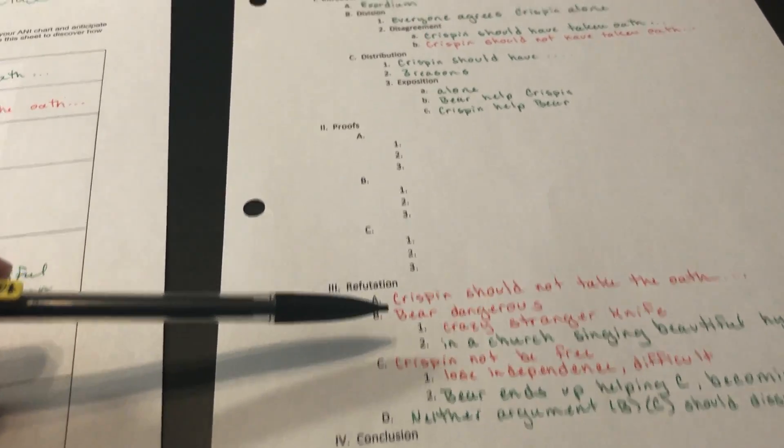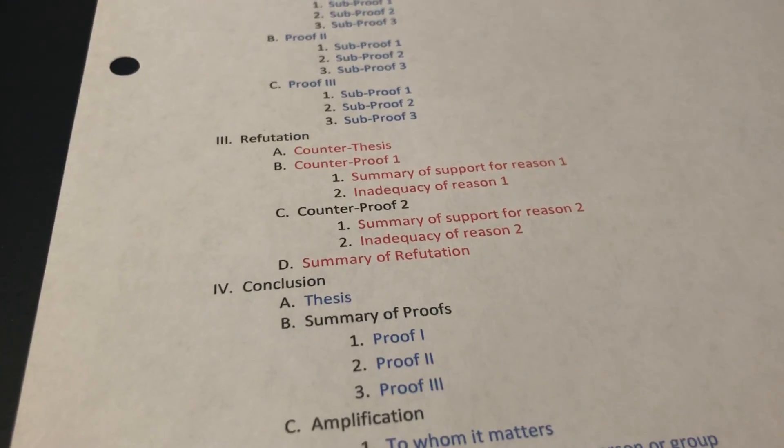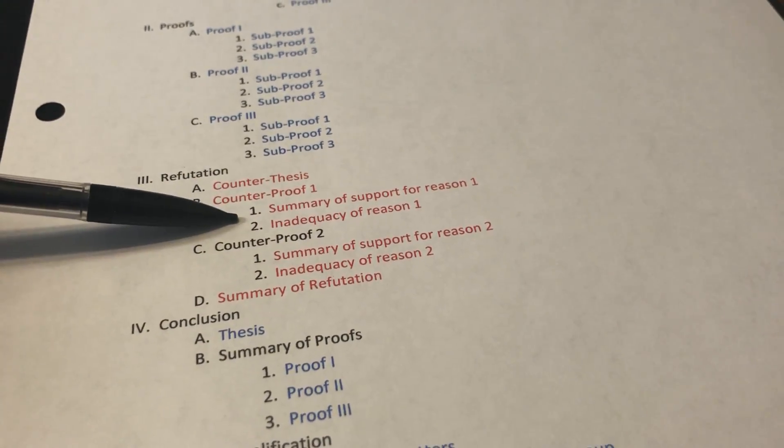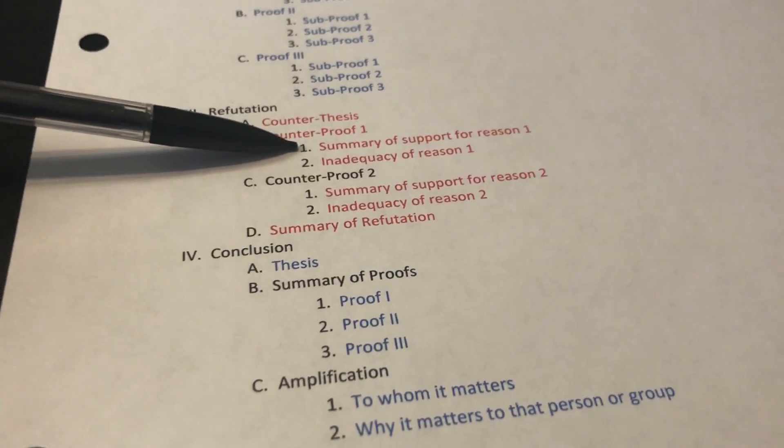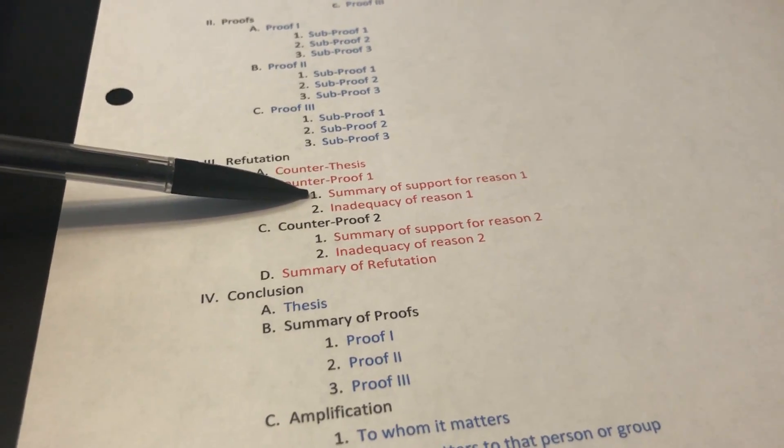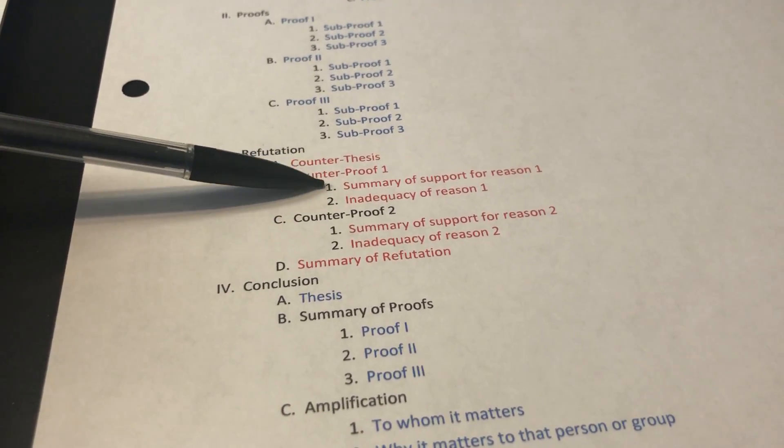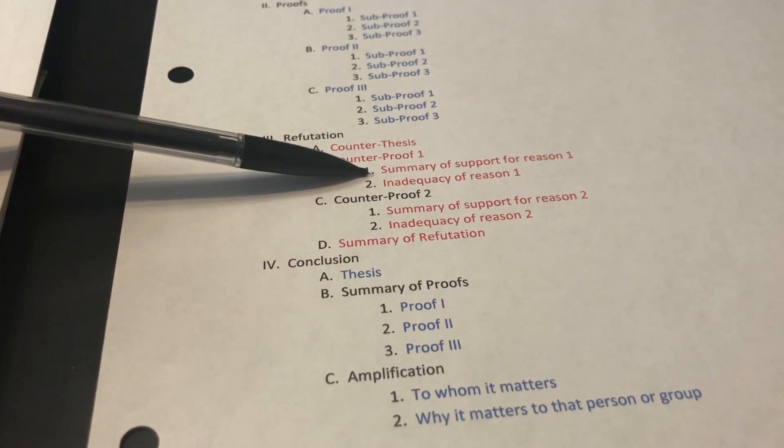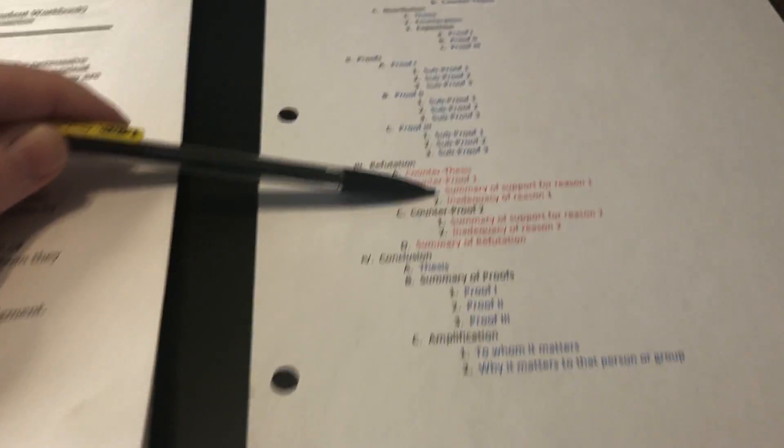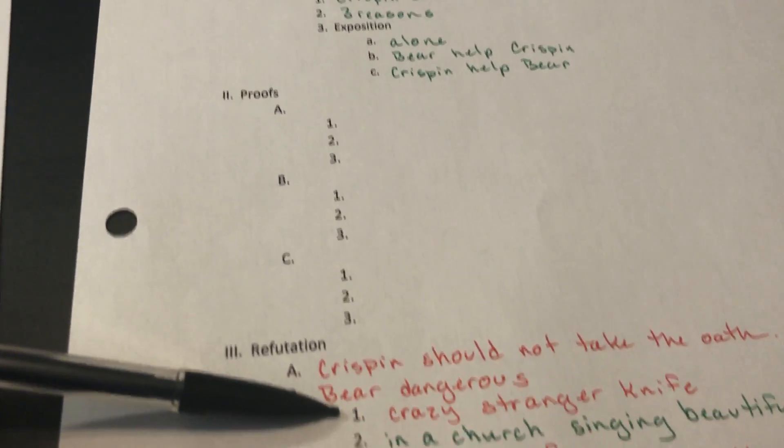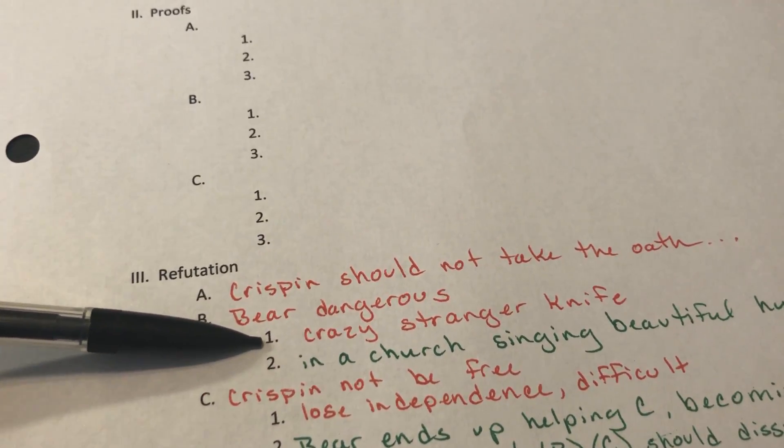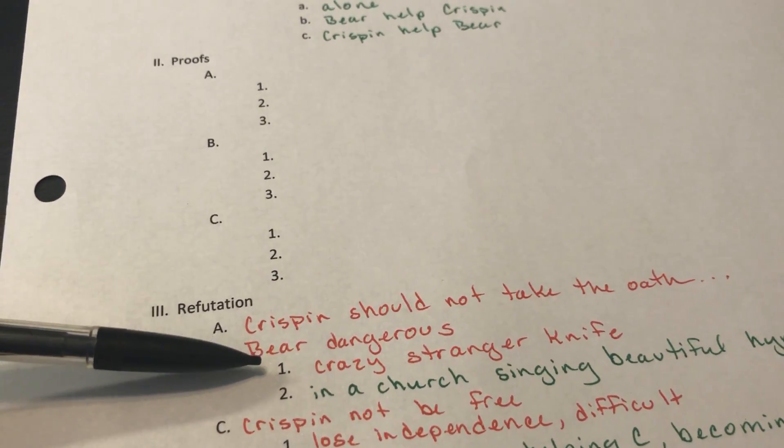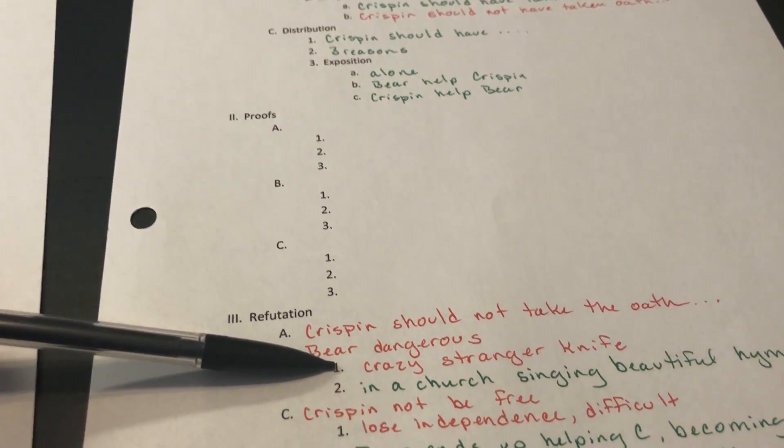Reason number one, Bear was dangerous. On the actual outline in the book, it says that you're going to say your counter thesis and then your counter proof one, and then you're going to give a summary of support for reason one. This doesn't have to be just a single statement. We did list three reasons that went underneath this counter proof. We can summarize that into a single sentence or develop it further into multiple sentences. So that's up to you and the writing style of your child.